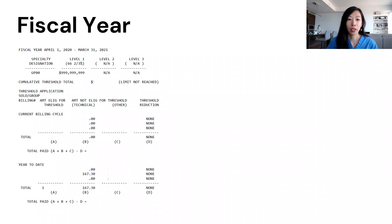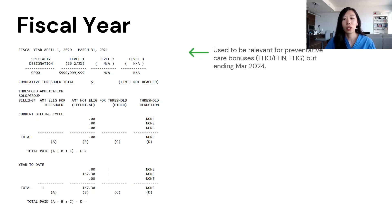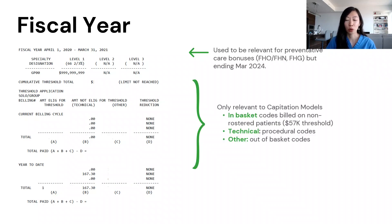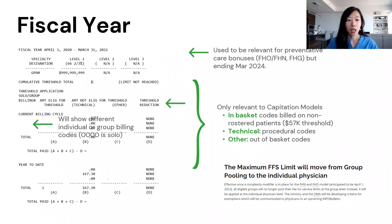If you scroll down, the fiscal year section is next. The start of the billing year is not January but April. This matters when submitting your preventative care bonuses at the end of March, and also when knowing when to bill a premium code, which I'll discuss in a later slide. The threshold section is more applicable to FOE and FIN models, as there is an individual limit of $57,000 for how many in-basket codes you can bill. In-basket codes are eligible for a threshold, while procedure codes (technical) and out-of-basket codes (other) are not. If you're working with different groups, your individual and group billings are shown here, with four zeros representing your solo billings.